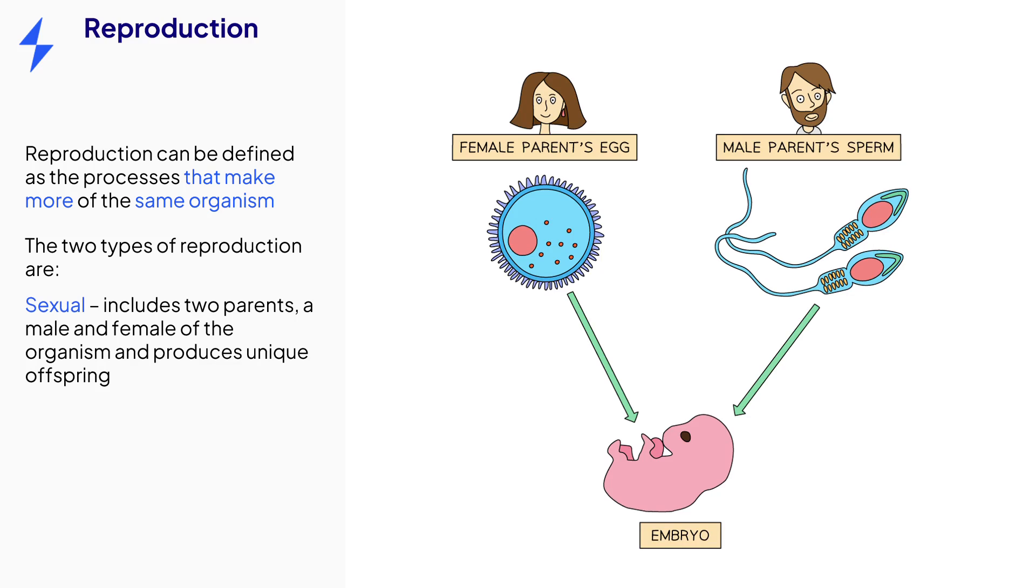Sexual reproduction includes both male and female parent organisms. And the offspring will contain variation based on these two parents and their DNA.